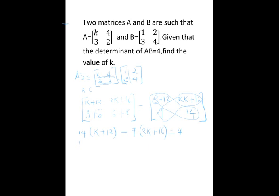So, removing the brackets, we have 14K plus 14 times 12, that is 168, minus 18K, that is 9 times 2K, minus 9 times 16, that is 144. All this should give us 4.